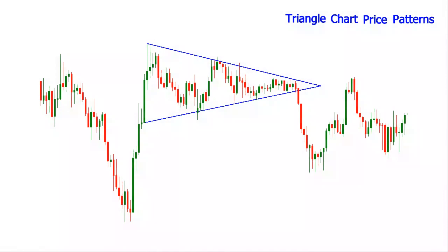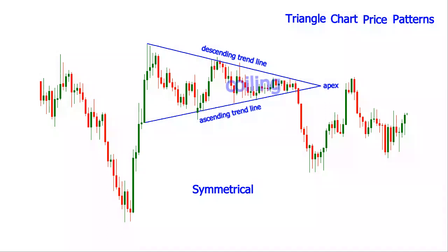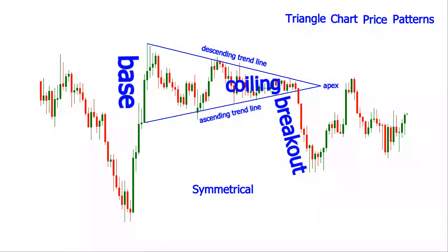The symmetrical triangle pattern is formed by two intersecting trend lines of similar slope. These two lines are converging at a point called the apex. The coiling of price that happens inside the triangle will eventually result in a breakout. The breakout can occur in any direction and the move is often as big as the base of the triangle.